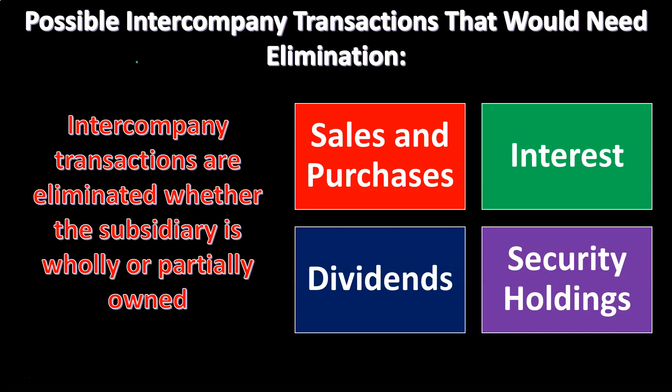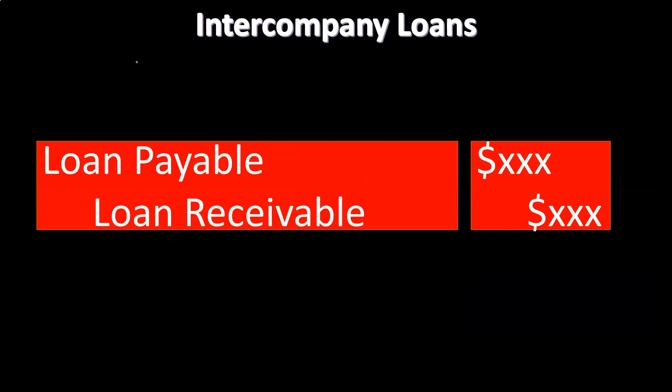You might justify that by saying the consolidated financial statements are there to represent the assets and liabilities that the parent company has control over, and the income statement represents the performance of those net assets that the parent company has control over. So from that perspective, it would make sense to remove the entire amount of the intercompany transaction, because the parent would have ultimate control to allocate assets and resources. You wouldn't want to allocate assets and resources to yourself if you have control to do so — it would make sense to eliminate the intercompany transactions.